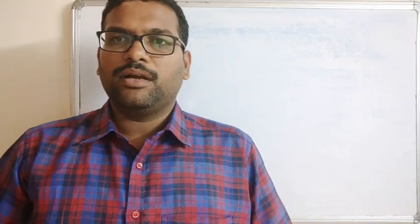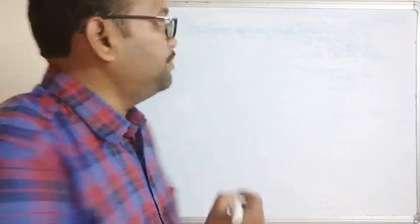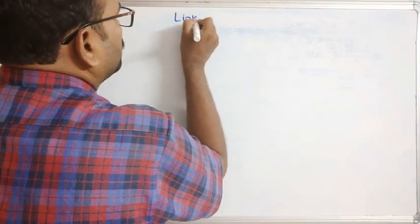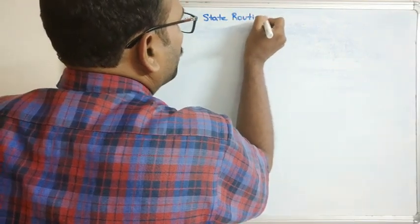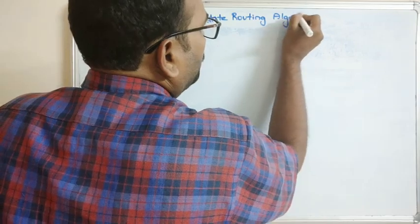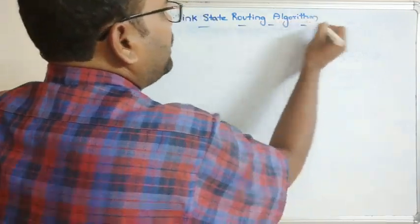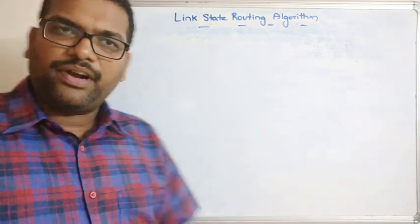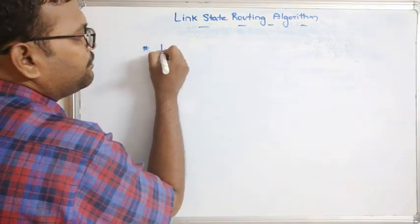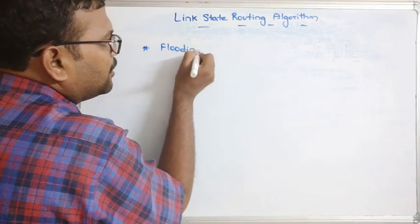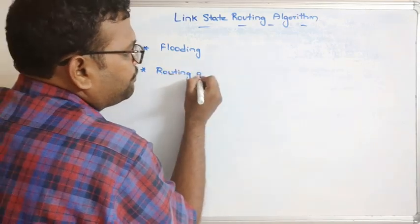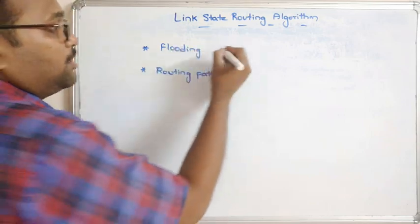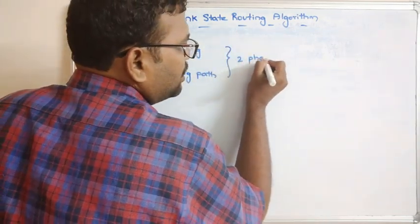Hello friends, welcome back to our channel. Today we will see one more algorithm in computer networks: the link state routing algorithm. This complete link state routing algorithm involves two different phases. The first phase is a flooding phase and the second one is finding the routing path. These are the two different phases involved in this particular routing algorithm.